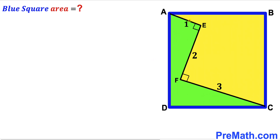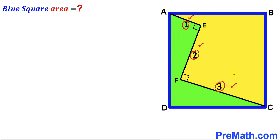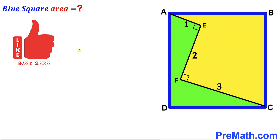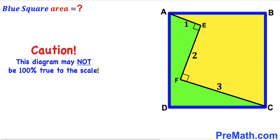Welcome to PreMath. In this video we have three line segments AE, EF, and FC fully confined in a blue square ABCD, such that the angles between them are 90 degrees. Segment AE is one unit long, segment EF is two units, and segment FC is three units long. Our task is to calculate the area of this blue square ABCD. Note that this figure may not be 100% true to scale.